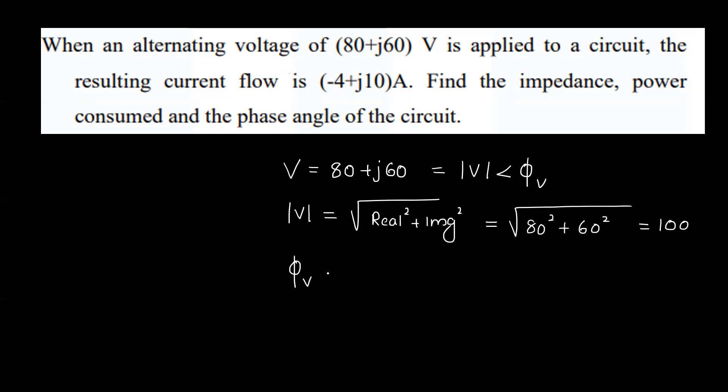The angle φᵥ is equal to tan inverse of imaginary part divided by real part. That is tan inverse of 60 by 80, which equals 36.86 degrees. The voltage is equal to 100 angle 36.86 degrees. Now let's take a look at the current value.